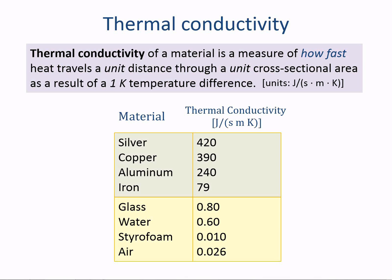For different materials we have quite a range of thermal conductivity. Metals have a relatively high thermal conductivity and for that reason are considered good conductors of heat. On the other hand, glass, water, styrofoam are poor conductors of heat and that shows in the value of their thermal conductivity. Air is a particularly poor conductor of heat as long as it's dry and the thermal conductivity of air is 0.026 joules per second meter Kelvin.